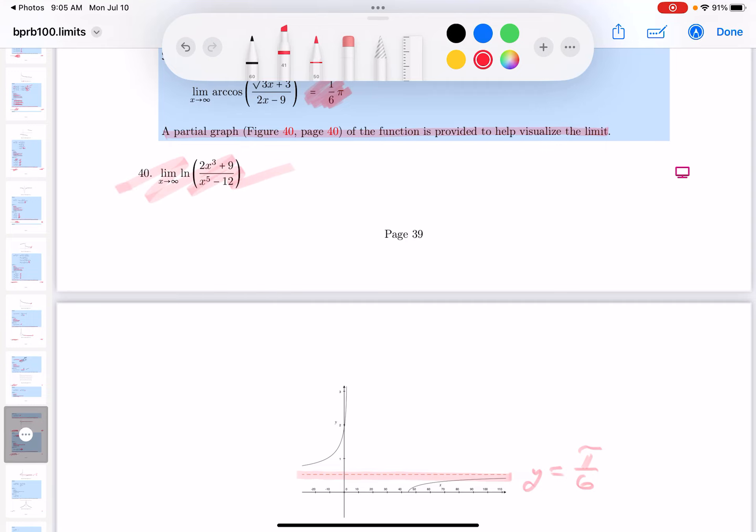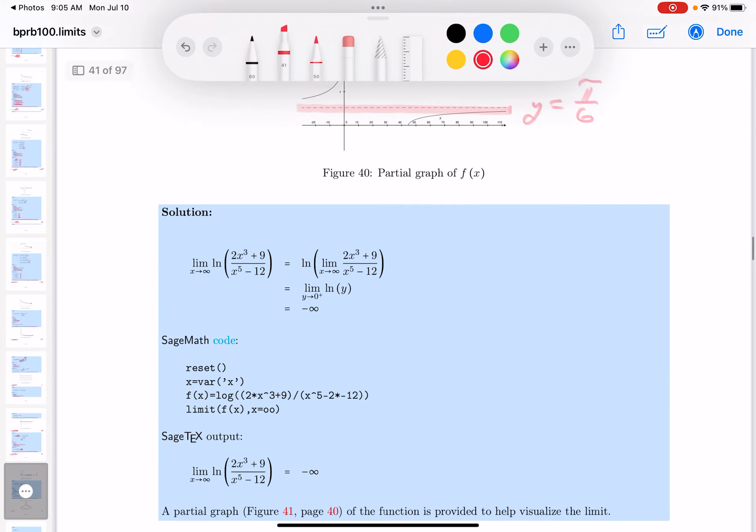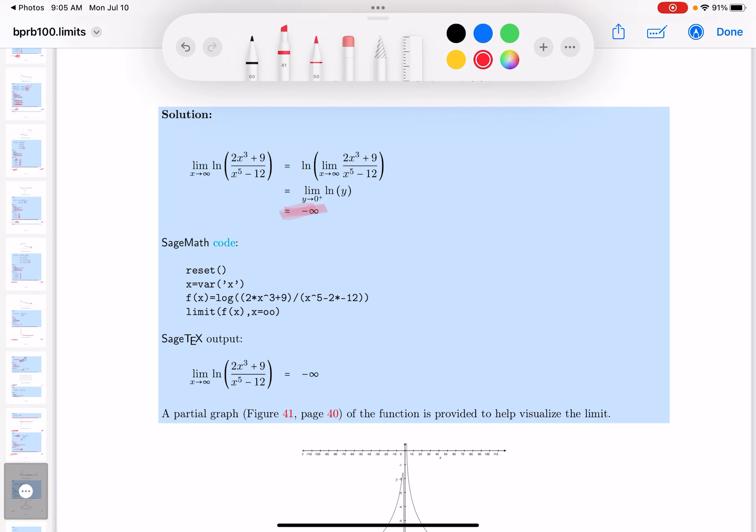Okay, we're on problem number 40. We did the problem and got this answer over here. Now again using Sage—again a repetitive loop by the way—resetting, defining a variable, entering the function as written...